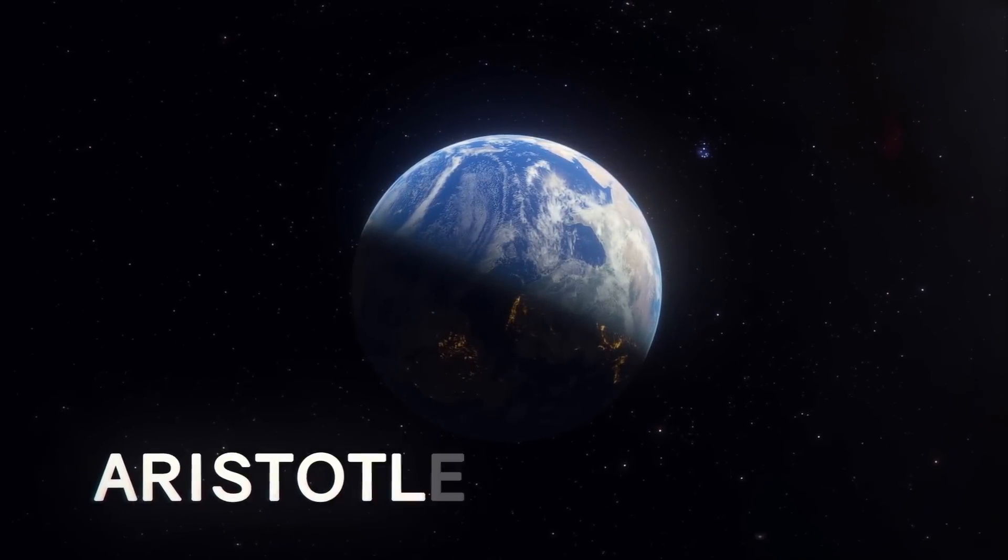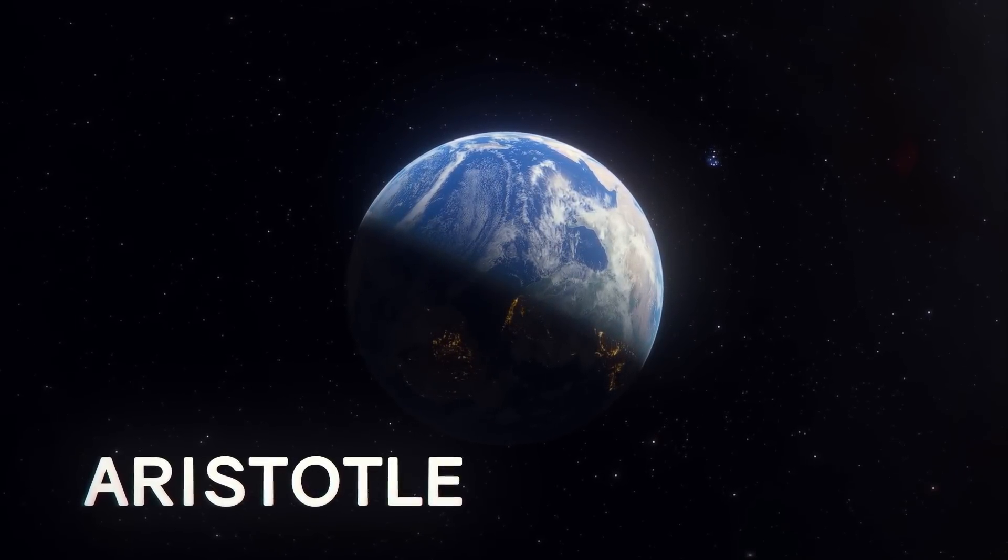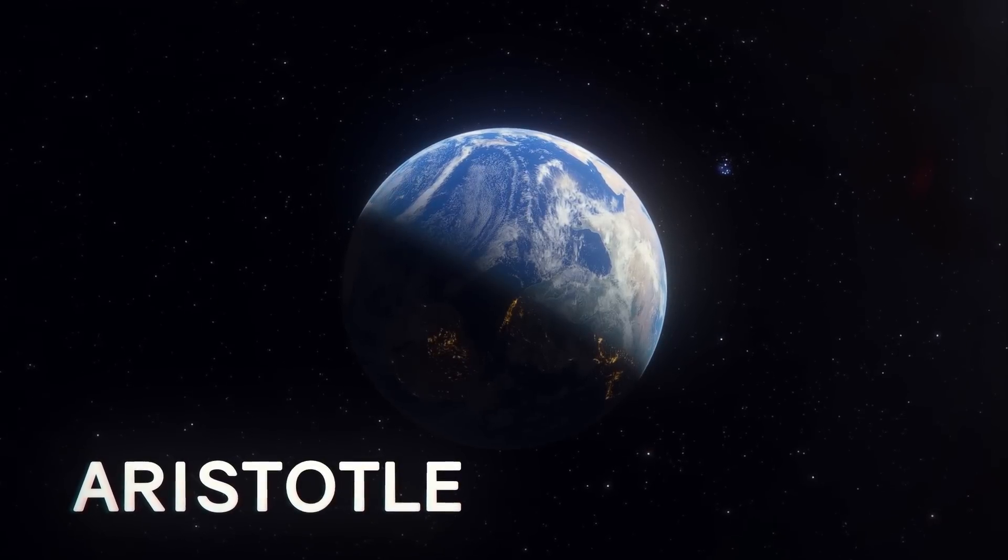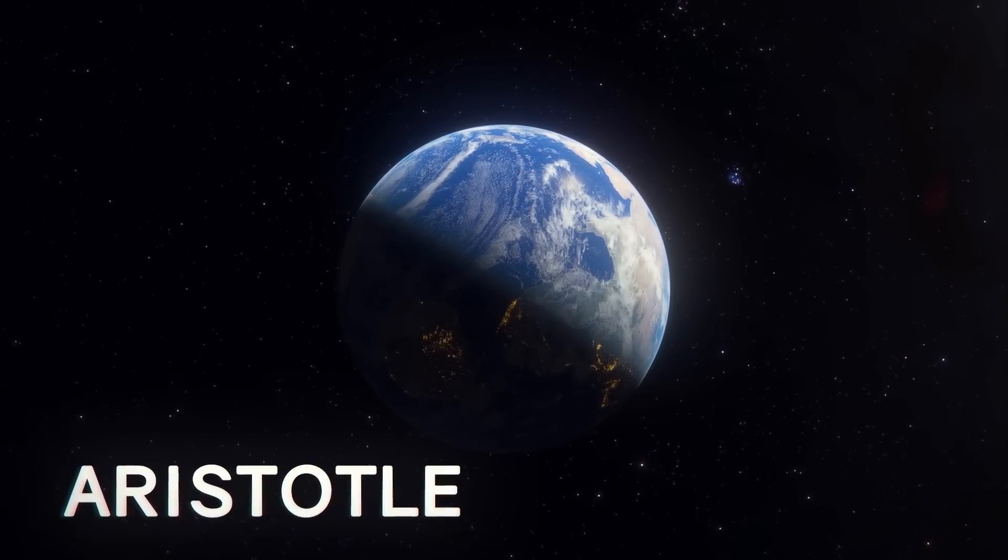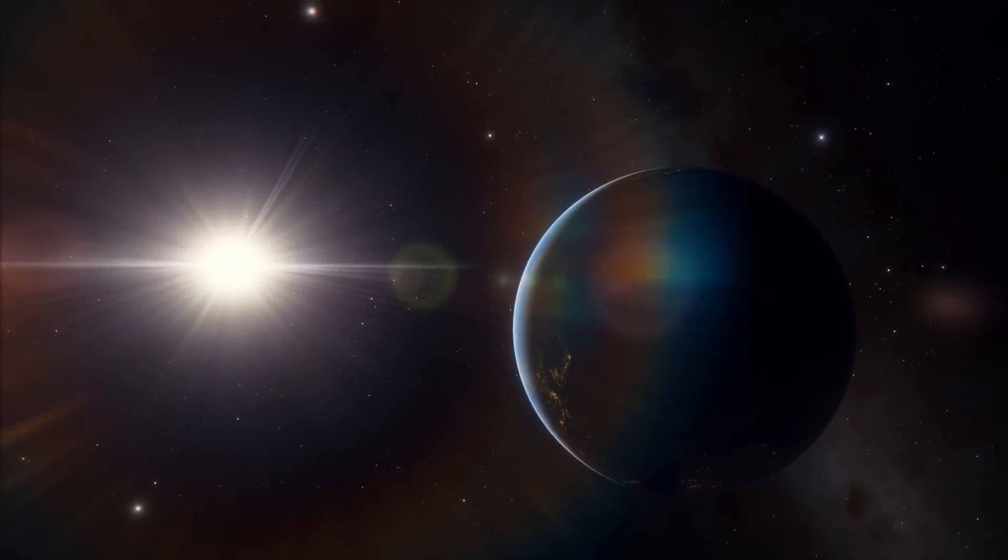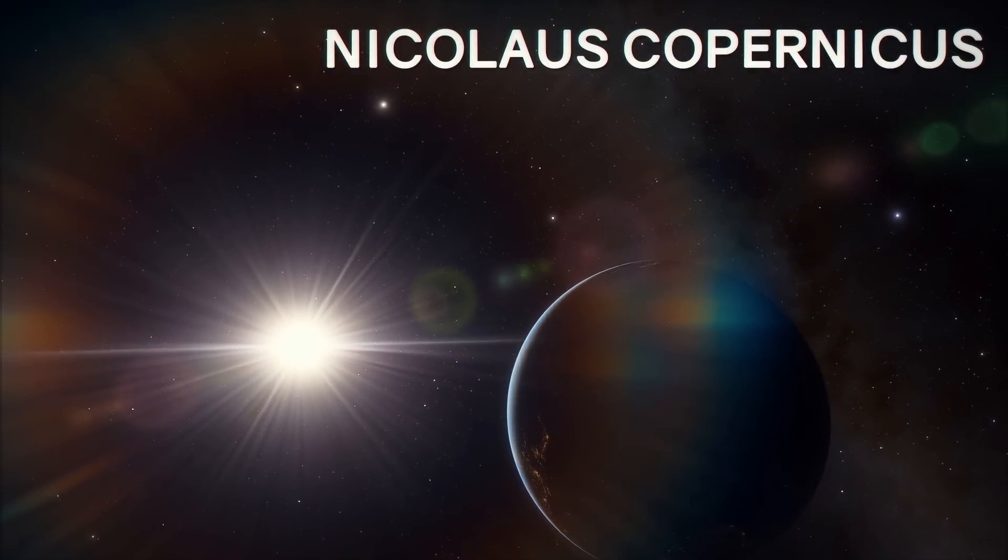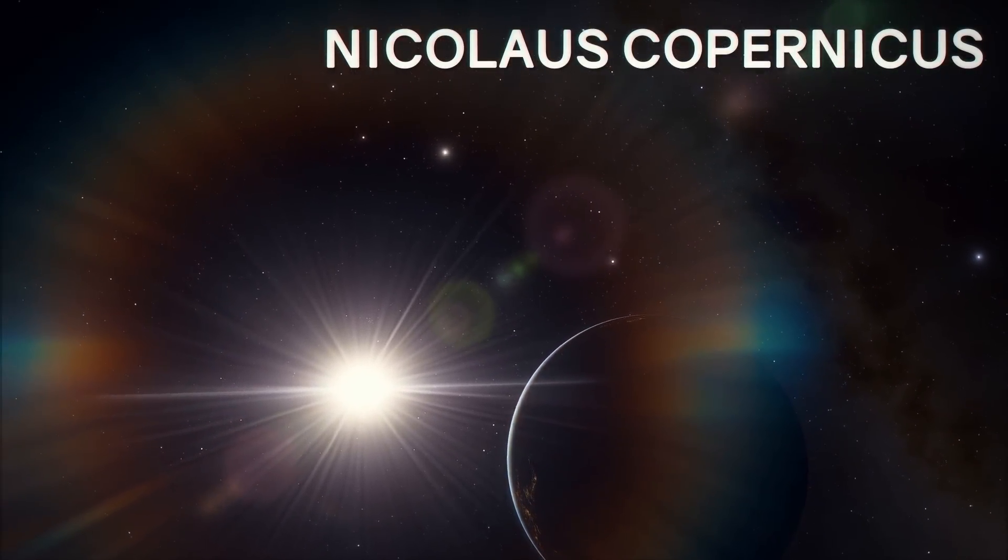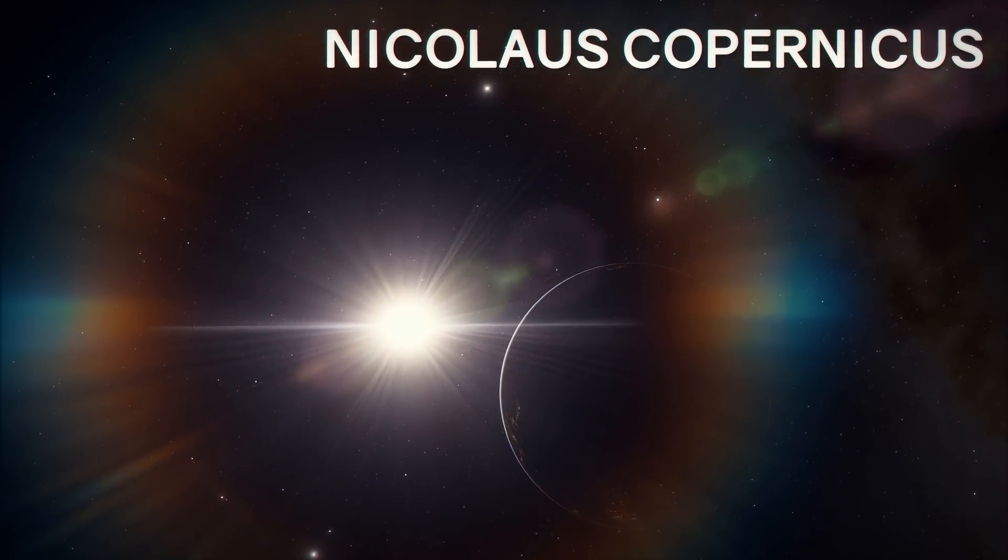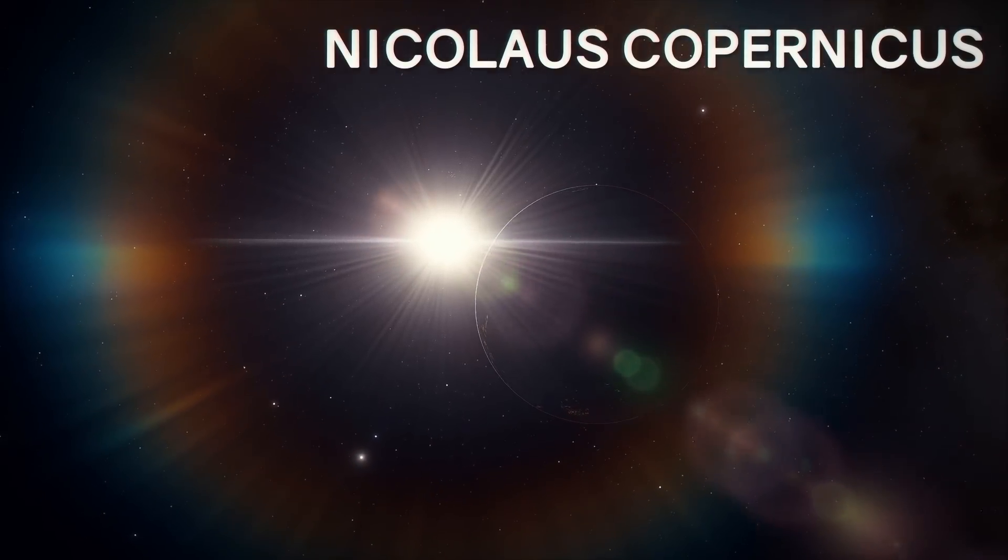Later, the ancient Greek philosopher Aristotle came to the conclusion that the planets and even the sun revolve around Earth. And in the 16th century, Nicholas Copernicus was convinced the Earth itself revolved around the sun, which was thought to be the center of the universe.